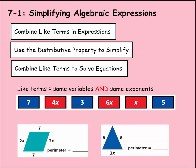We're on Lesson 1 of Chapter 7, which is Simplifying Algebraic Expressions. First, we're going to combine like terms in expressions. Then we're going to use the distributive property to simplify. Then we're going to combine like terms to solve equations.